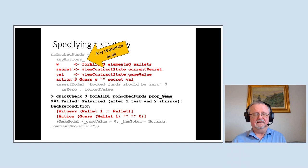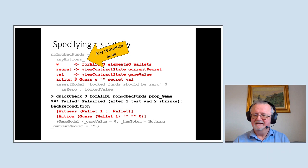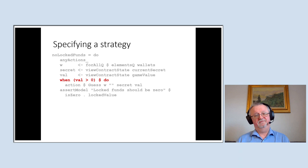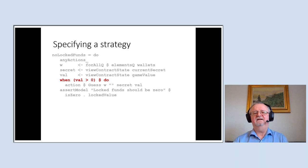This strategy doesn't work at the beginning of the world — and this is what QuickCheck is telling us. Of course, at the beginning there is no money locked in the contract, so we don't need to do anything. We can refine the strategy: only try to withdraw money from the game if there is some money there. So if the value of the game is greater than zero, we'll make a guess; otherwise we don't need to do anything.